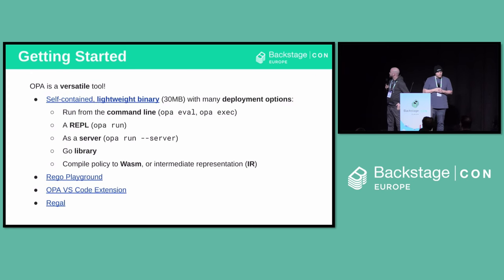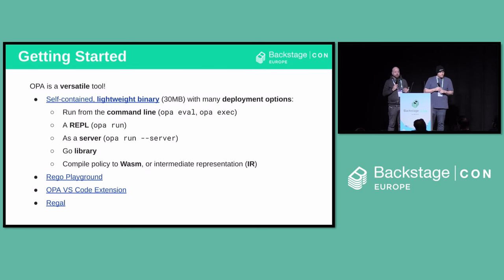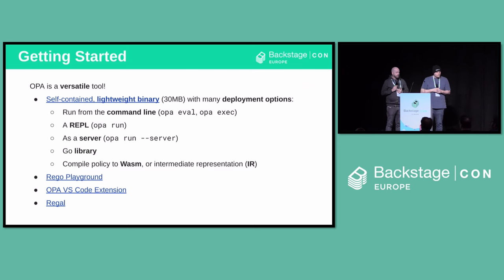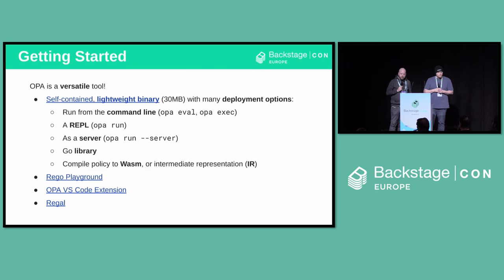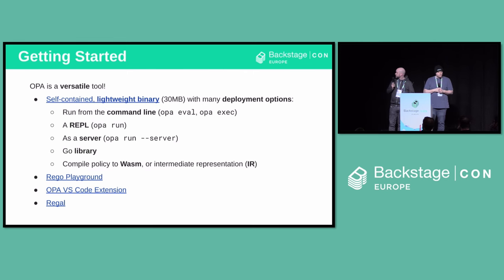If you want to try OPA, it's a very versatile tool — a lightweight, self-contained binary of around 30 megabytes. There's a whole bunch of deployment options: you can run it from the command line, as a REPL, or as a server. Running OPA as a server is the typical way to integrate it with things like Backstage — you run OPA as a process on the side and query it via its REST API. There are also other integration options like libraries or Wasm, plus many useful tools for experimentation.